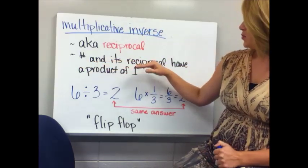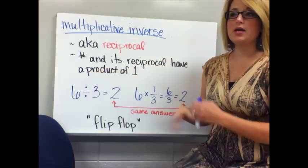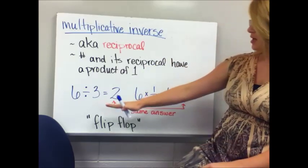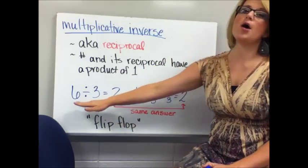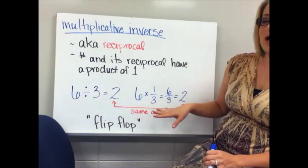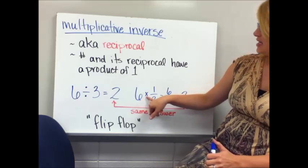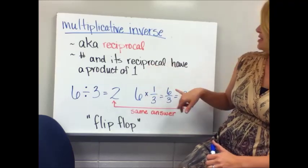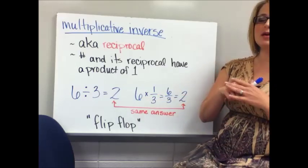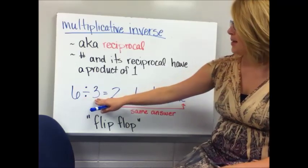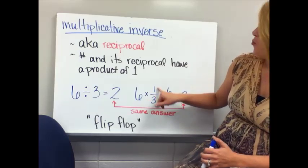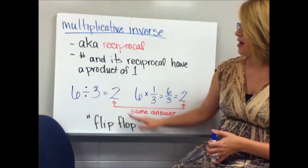A number and its reciprocal have a product of 1. So when I multiply a pair of reciprocals together, I get 1. For example, you know 6 divided by 3 equals 2. I can also multiply 6 by 1 third to get 6 over 3, which simplifies to 2 — the same answer. So dividing by 3 is the same as multiplying by 1 third, and 1 third is kind of the flip-flop of 3.